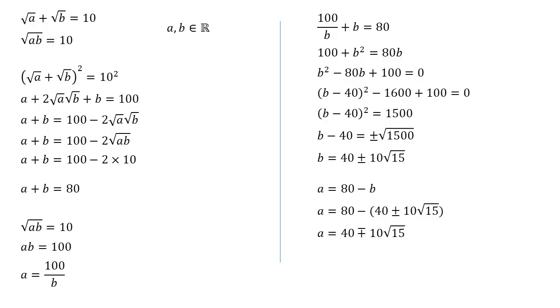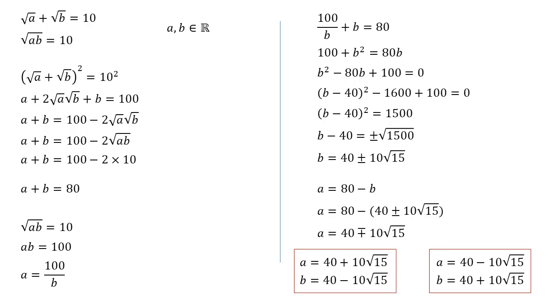So bringing these together, we've got two pairs of answers. We've got a is equal to 40 plus 10 root 15, and b is equal to 40 minus 10 root 15. And we've got these the other way around. So a is equal to 40 minus 10 root 15, and b is equal to 40 plus 10 root 15.